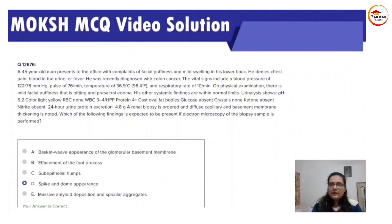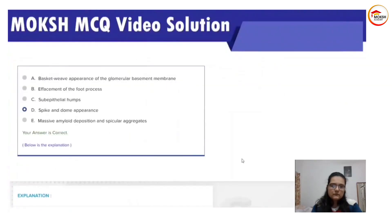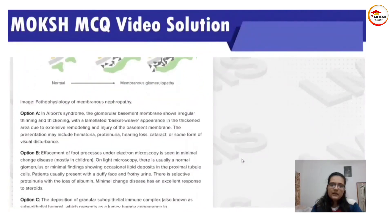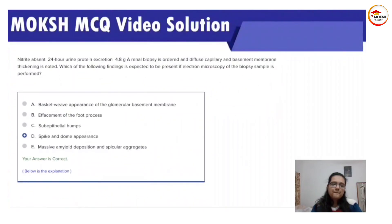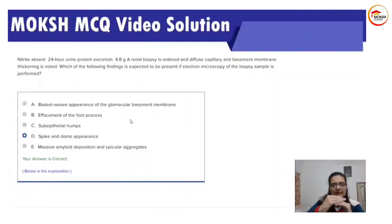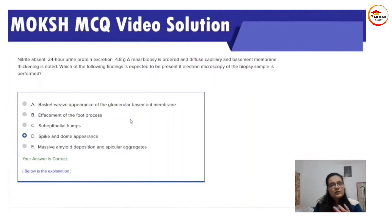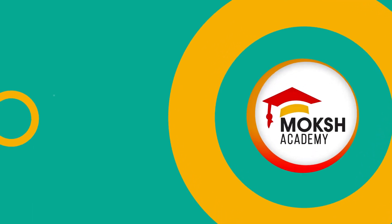So in our case the answer is spike and dome. Here is a diagram of immune complexes being deposited. A key fact to remember: whenever glomerulonephritis is immune-mediated, the complex deposition will be sub-epithelial — there is epithelium, basement membrane, then vascular endothelium. Whenever the process is inflammatory, the deposits will be sub-endothelial. So in PSGN and membranous nephropathy — both immune-mediated — the deposits are sub-epithelial.